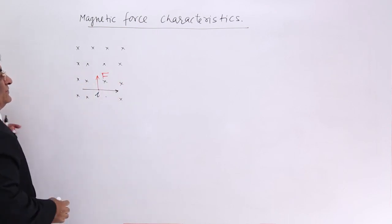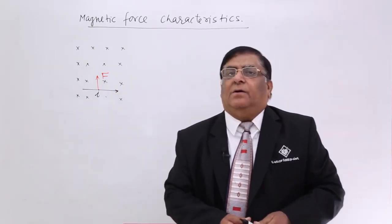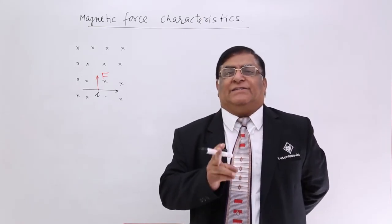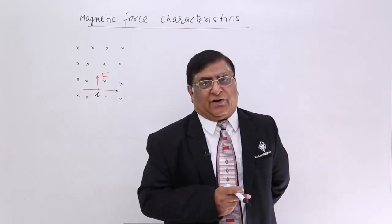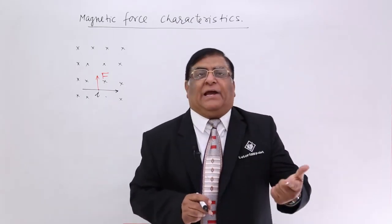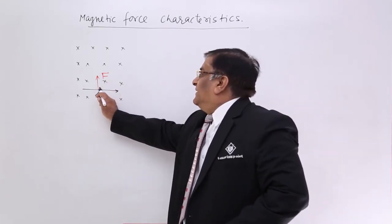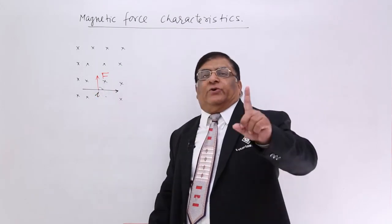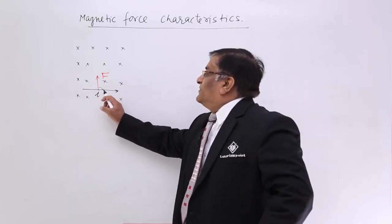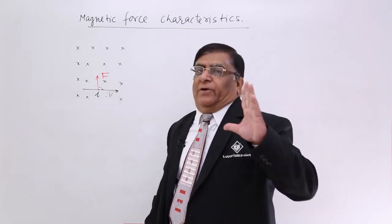The force F is acting perpendicular to the velocity. Now what happens because of this force? We know that a force can do three things: increase the velocity, decrease the velocity, or change the direction. For increasing or decreasing the velocity, the force should be acting in the direction of velocity, or its component should be acting in the direction of velocity. The component of this force in the direction of velocity is F cos 90, and F cos 90 is 0. So no force is acting in this direction.